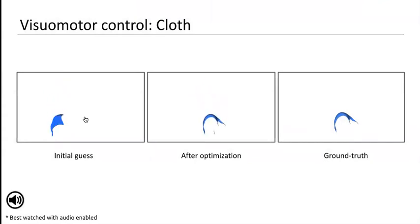We also support the simulation of thin shell bodies like cloth. Here, we optimize for the initial velocity of a cloth such that its final state matches the ground truth image on the right.